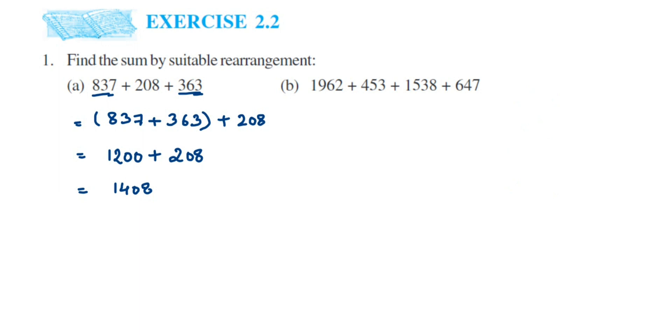Now let's do the second question. I hope it's clear how we're doing it. Now in the second question, if you see I have a 2 in the first number, so 2 plus 8 is 10, right? And 3 plus 7 is also 10. So I'm going to arrange them. I'm going to put them in a bracket: 1962 plus 1538 together, keep this in a bracket, then plus the second number and the last number, 453 plus 647.